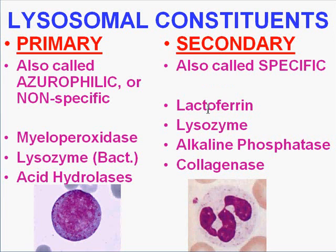You should always have a general recognition of the enzymes inside the lysosomes that make up the granules of granulocytes. If you want to remember four key things in the mature neutrophil, remember: lactoferrin, lysozyme, alkaline phosphatase, and collagenase.